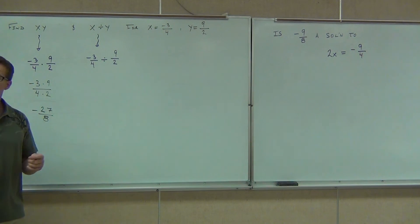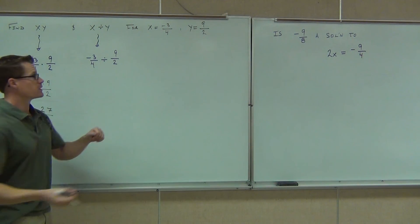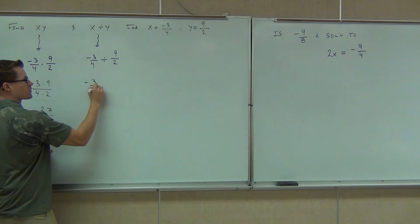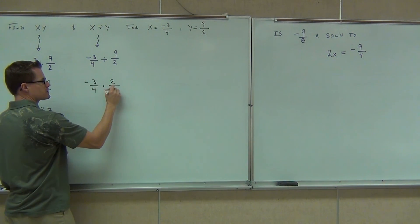Next one, we have a division problem. Division says you are going to find the reciprocal at some point. We'll have negative three-fourths multiplied by two-ninths.